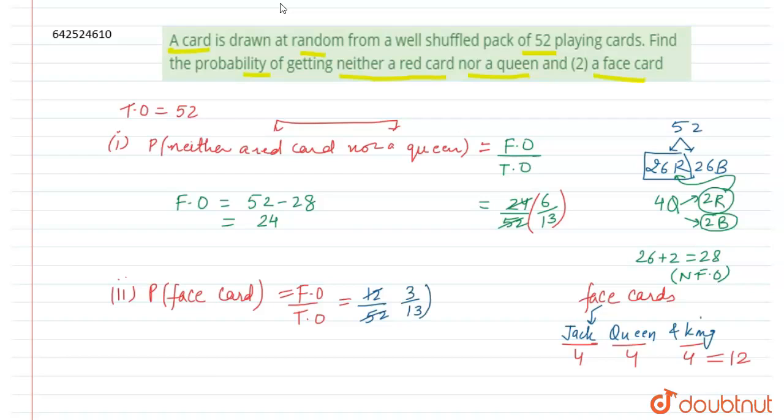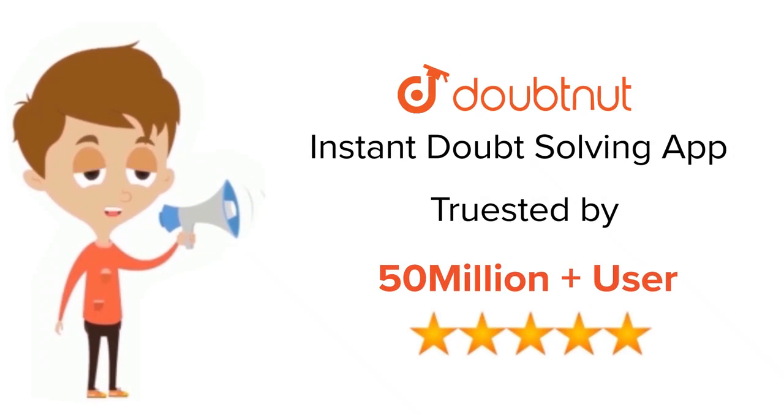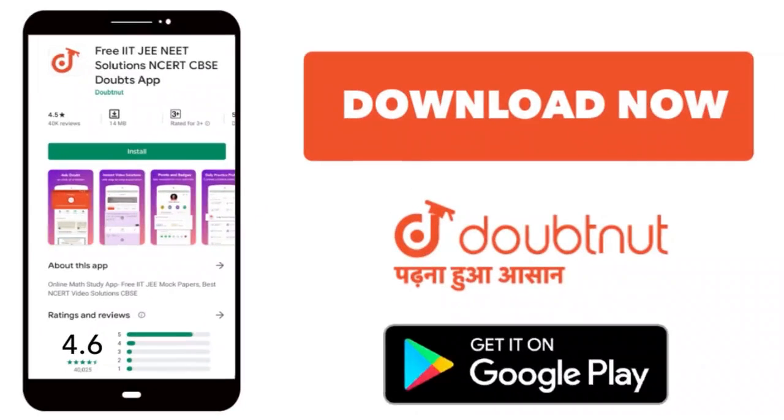Again we can cancel this out with 4, so 4 times 3 and this becomes 13. So the answer has a probability of 3 by 13. Clear, thank you. For class 6 to 12, IIT, JEE and NEET level, trusted by more than 5 crore students. Download Doubtnet today.